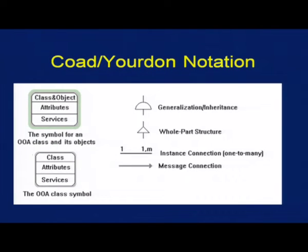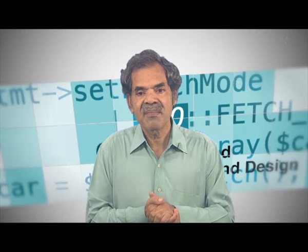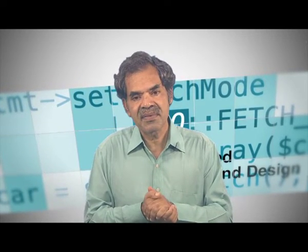Coad-Yourdon — Peter Coad and Edward Yourdon, Edward Yourdon is no more — they have given a notation. It is not the object but the representation symbol for an OOA class and its objects. The OOA class generalization is represented in one way, the whole-part structure another way, instance connection one-to-many, message connection. Simple few notations — it looks like an AND gate; generalization or inheritance, whole-part structure. They have a separate notation and different terminology which works if you are consistently using that particular method.